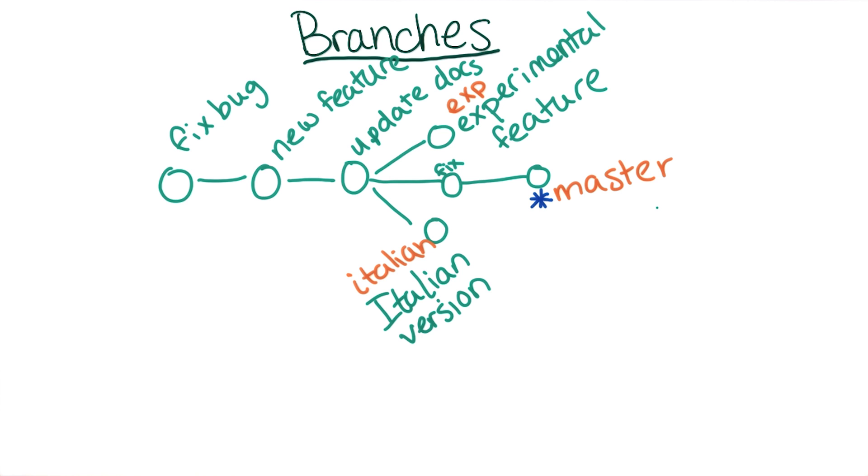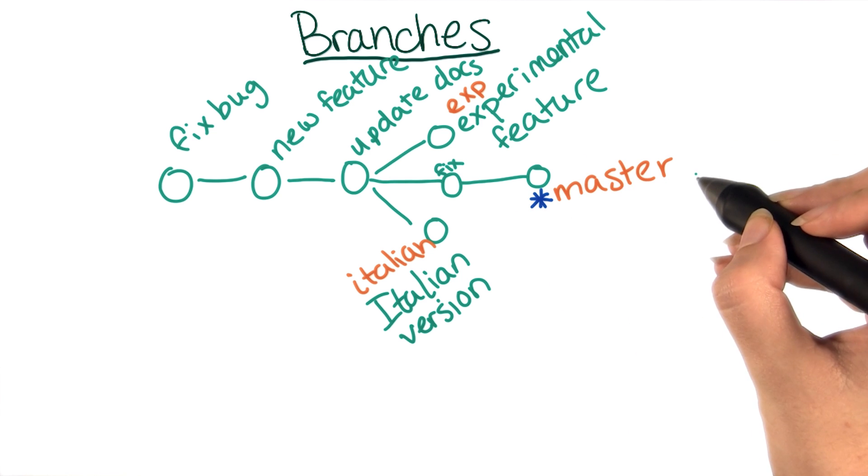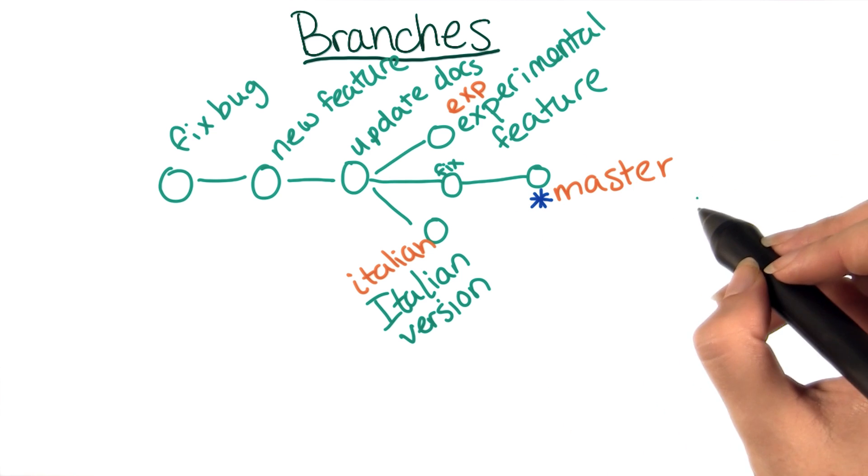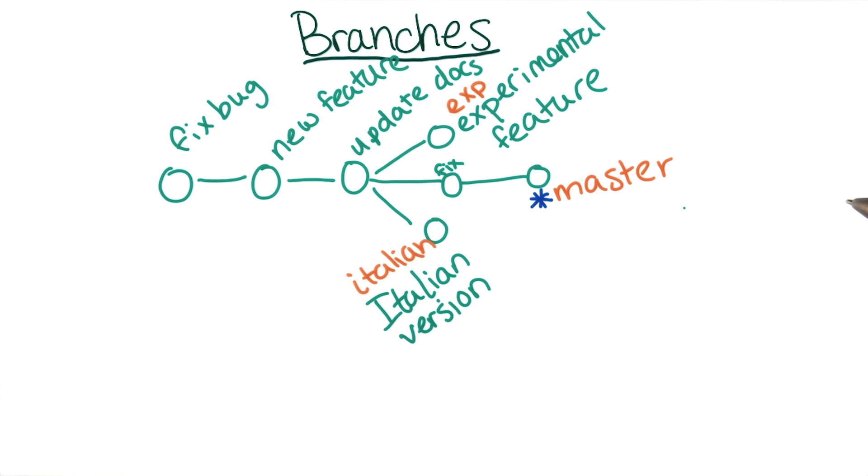If you check out a branch and then make a commit, the branch label automatically updates to the new commit. That branch also stays checked out, so you don't have to check it out again. This is how you've managed to stay on the master branch without knowing anything about branches up till this point.